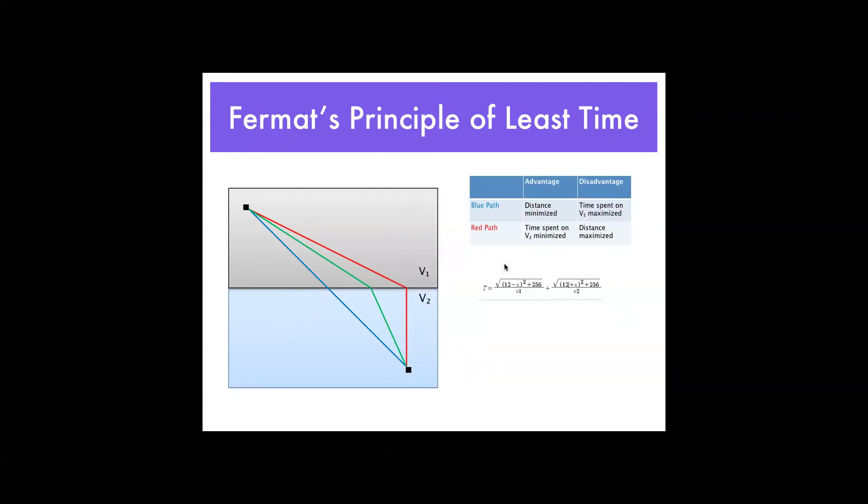Another way is, if you're familiar with it, the first derivative test. Finding the derivative of this function and setting the derivative equal to 0. We have 1 here and 1 over 3 here because our velocities, in such case, are assumed to be v1 equals 1 and v2 equals 1/3.